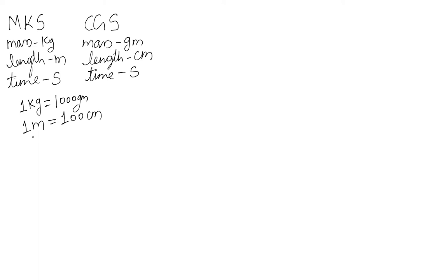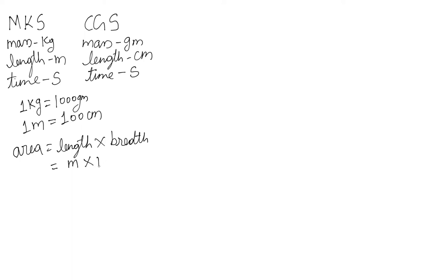Let's talk about area. Area is defined as length times breadth. We know that length is measured in meters and breadth is also measured in meters. So the unit for area will be meters squared — m times m is meters squared. This is just using exponents: multiplying two quantities and raising the exponent to 2.